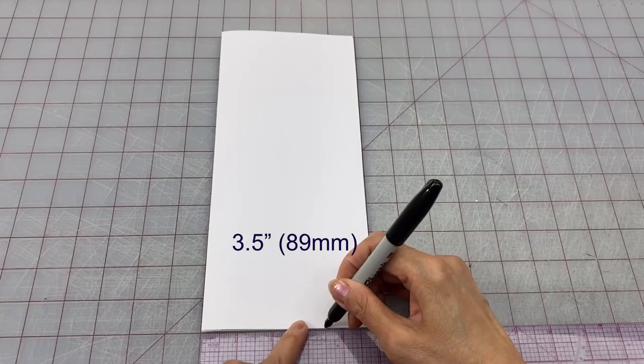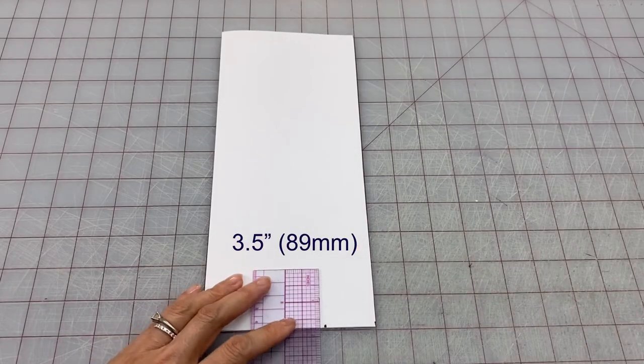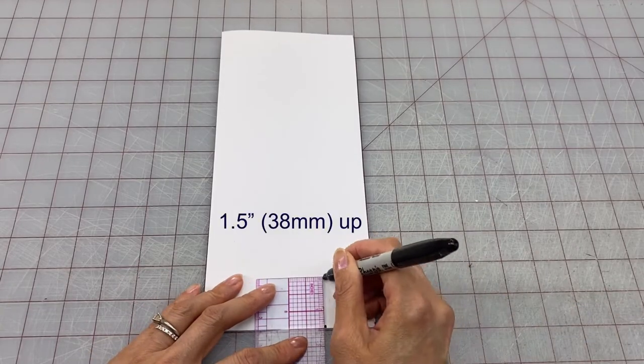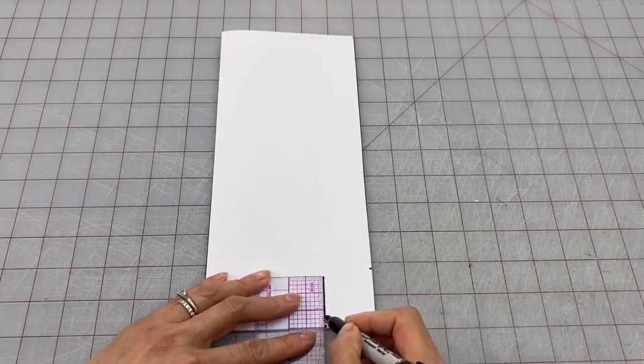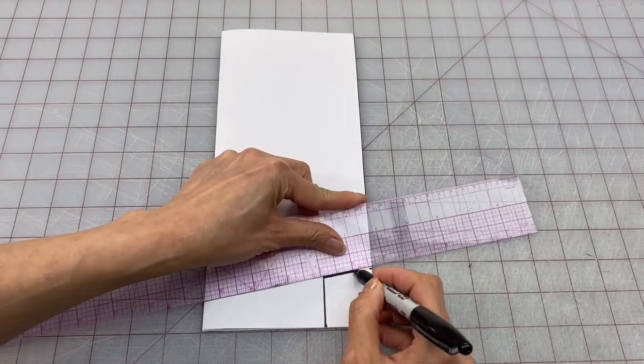On the bottom mark three and a half inches from the fold and then mark one and a half inches straight up from that mark. On the outer edge mark up one and three quarter inches, then join all those marks.